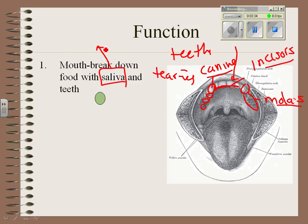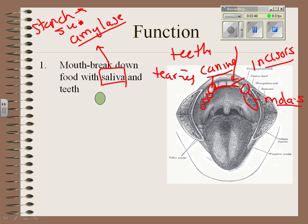Saliva contains an enzyme called amylase. We're going to be talking about enzymes in more detail a little later, and we'll take a closer look at amylase in class. Amylase breaks down starch to sugar. So your mouth's job is to take the food in and break it down.